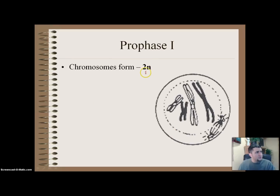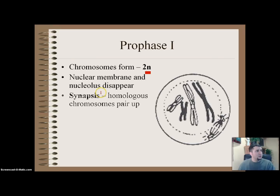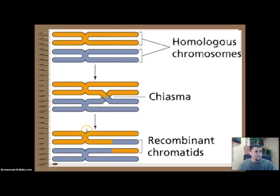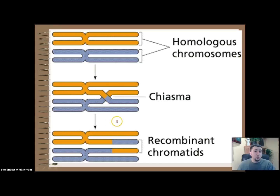In prophase 1, chromosomes are in the form of 2N — diploid. The nuclear membrane and nucleolus disappear, just like in mitosis. What's interesting is that we get something called synapsis, where homologous chromosomes — one from your mom and one from your dad — pair up and undergo crossing over. They actually exchange a little bit of DNA, which allows for more combinations of different human beings.